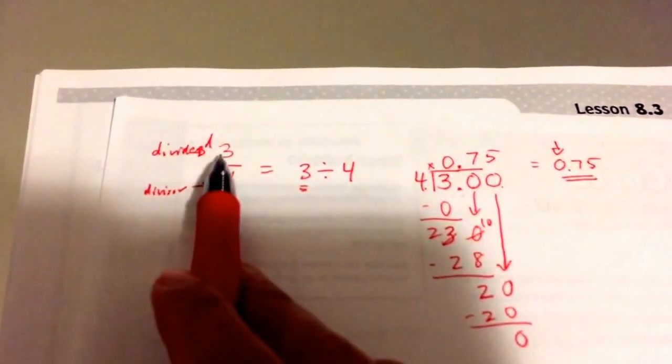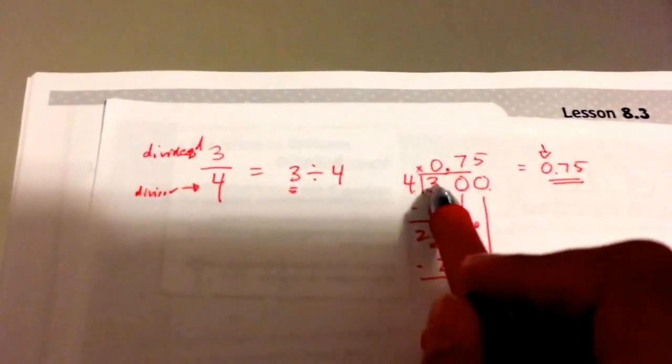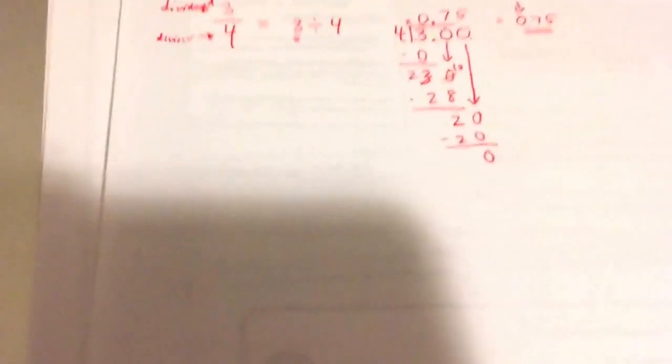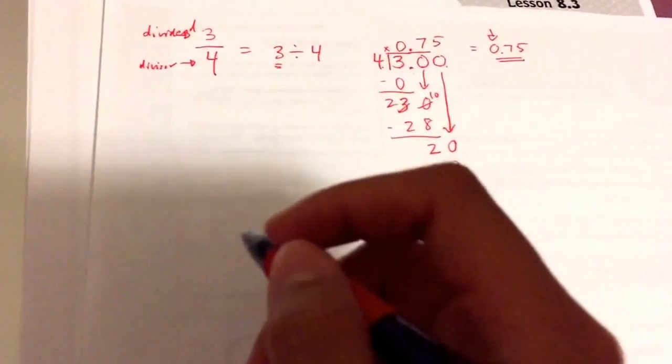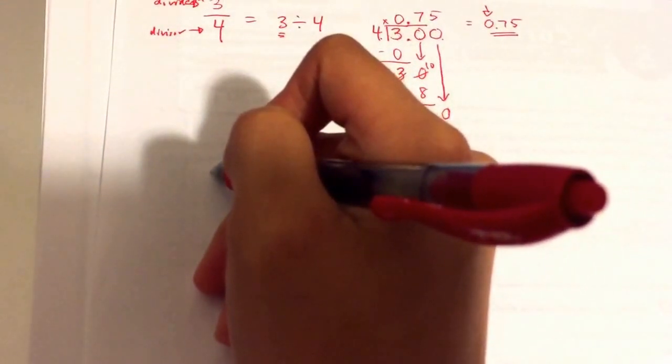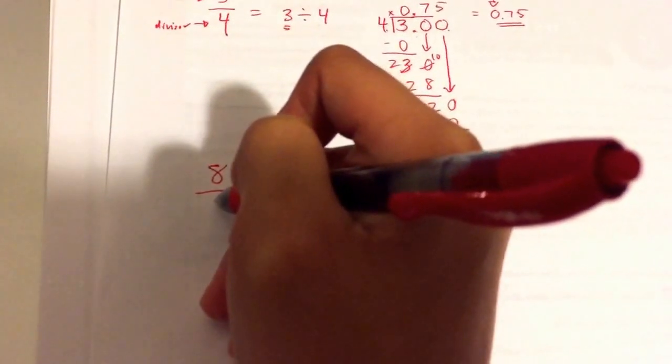When we're looking at a fraction, the numerator is the first number, the denominator is the second number. The first number is the one that's going to go inside the house. That's how much we have. So let's look at one more fraction before we start the new problem. Let's try 8 over 4.